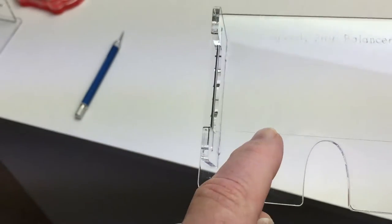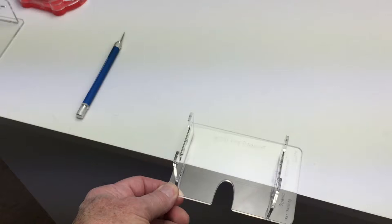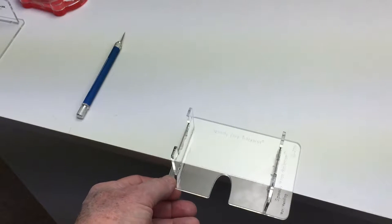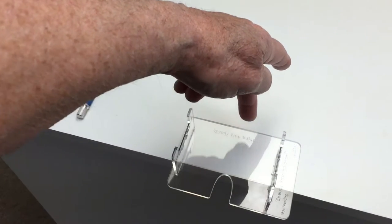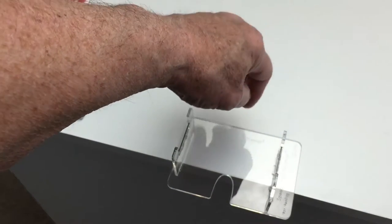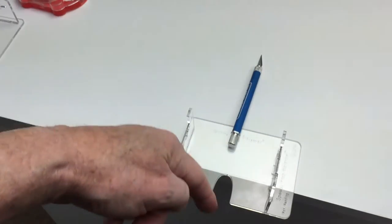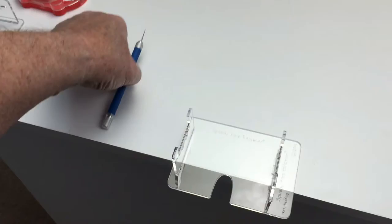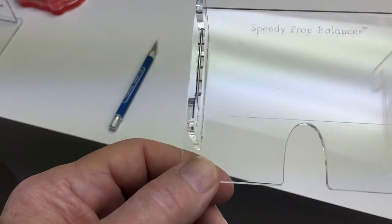There's a line on here next to this slot, and that's for using when you want to dynamically balance a prop. You put that line on the edge of the table and you level the mechanism. Occasionally on a really heavy prop you may have to put a small weight or something over here to keep it from being out of balance.